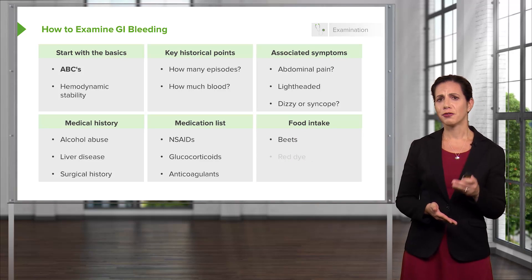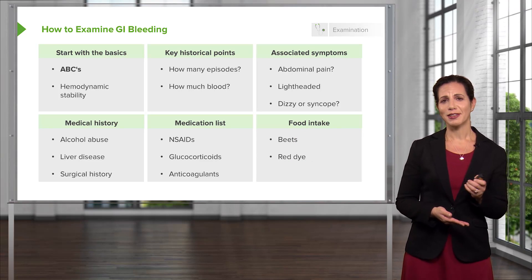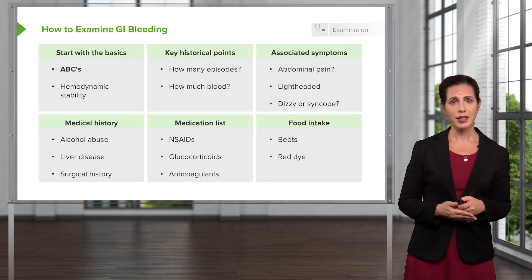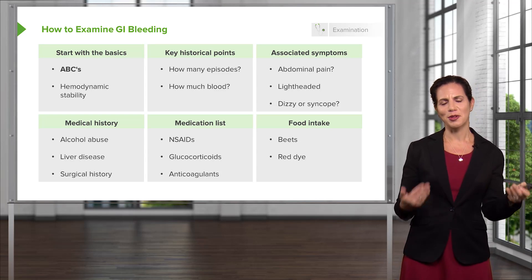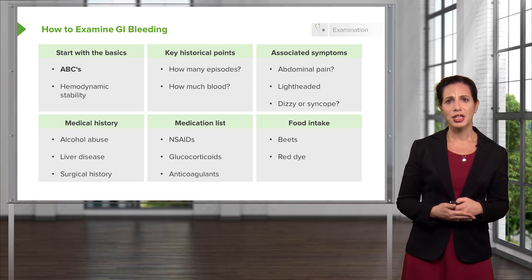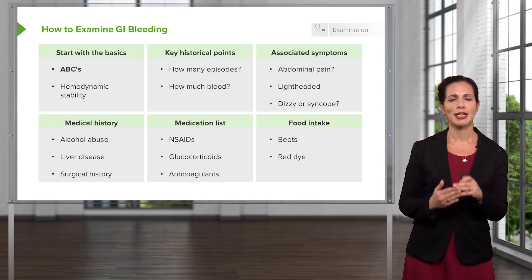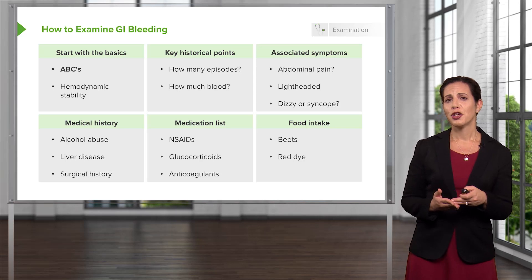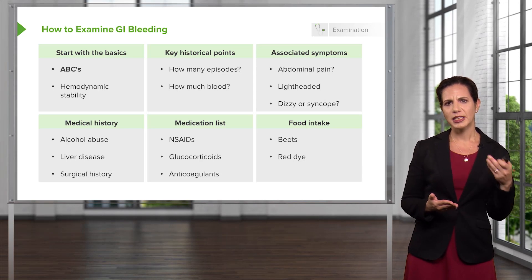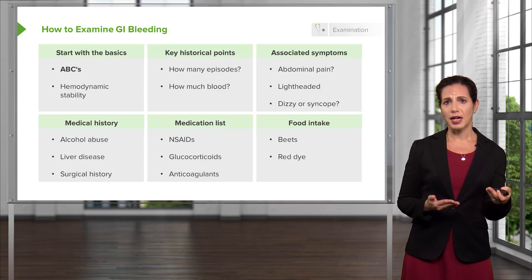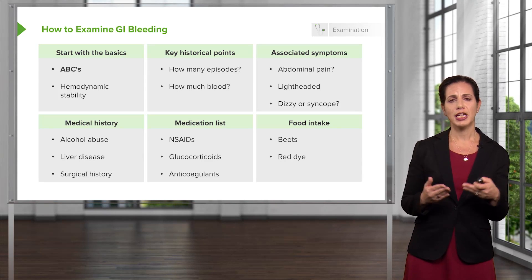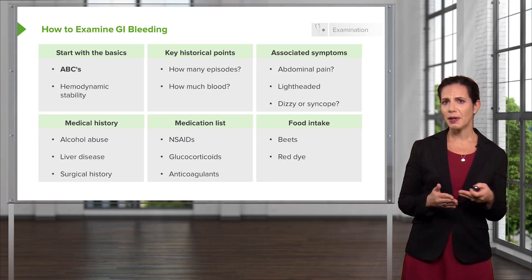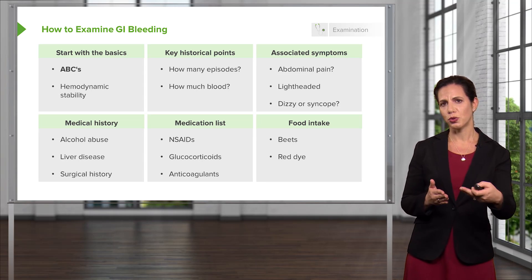Last but not least is food intake. Beets and foods with a lot of red dye can cause patients to appear as though they're having GI bleeding. Red beets can cause the stool to look just like blood. For example, a patient who drank a lot of red Gatorade during a GI illness had a bowel movement and was concerned about a GI bleed — it was simply the red dye. So asking whether the patient has eaten anything that could make the stool appear red is important.